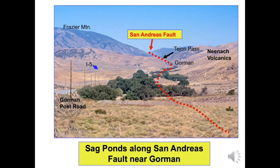This northwest-looking photograph taken along Gorman Post Road, eight miles southeast of Fraser Park, shows San Andreas Fault landforms near Tejon Pass. Irregularities of the fault trace are enhanced by the oblique angle of the photo. Trees show areas where water collected or is collecting within the fault zone — these are called sag ponds. The low hill on the right side of the photo shows a Nienach volcanic rock outcrop, which is significant to the understanding of the fault.